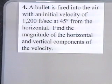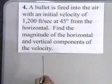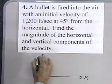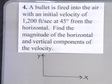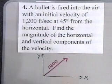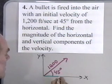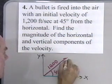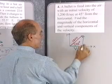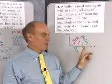Problem number 4: a bullet is fired into the air with an initial velocity of 1,200 feet per second at 45 degrees from the horizontal. Find the magnitude of the horizontal and vertical components of the velocity. I'll set up a rectangular coordinate system with an x-axis and y-axis, and draw a vector 1,200 feet long coming up from the horizontal at 45 degrees. The horizontal component is the horizontal velocity vector V_x, and the vertical component is the vertical velocity vector V_y.